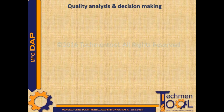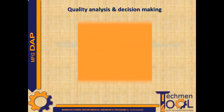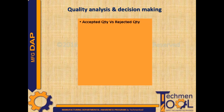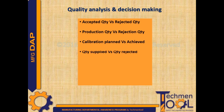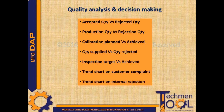These are the general quality analysis and decision-making KPIs: accepted quantity versus rejected quantity, production quantity versus rejection quantity, calibration planned versus achieved, quantity supplied versus quantity rejected, inspection target versus achieved, trend chart on customer complaint, and trend chart on internal rejection.